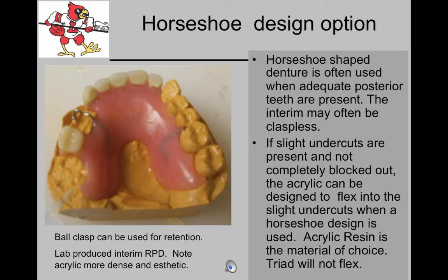The horseshoe-shaped form is often used when there's adequate posterior teeth present. The interim may be made and kept claspless if slight undercuts are present on the linguals. The acrylic resin can be designed to flex into those slight undercuts. Acrylic resin is the material of choice here since Triad will not flex. Ball clasps can be used for retention if there is no interference with opposing occlusion.